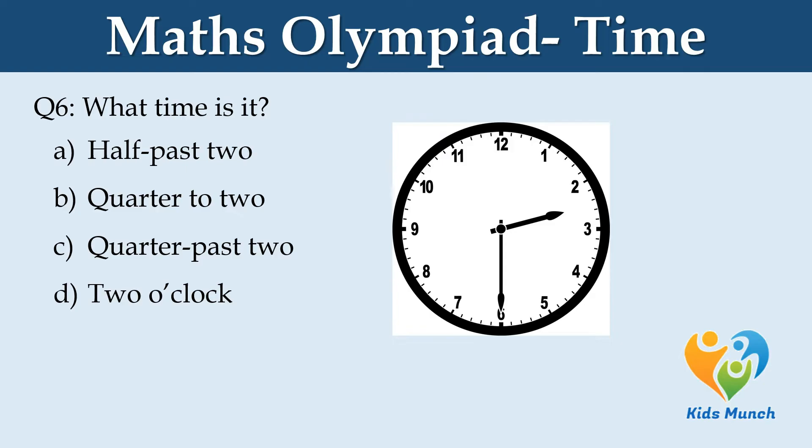What time is it? Option A: half past 2. Option B: quarter to 2. Option C: quarter past 2. Option D: two o'clock.